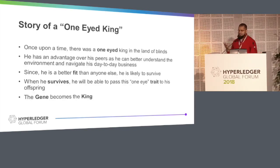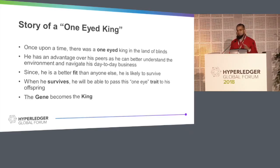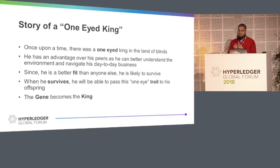Let me start with the story of the one-eyed king. There was a town of blind people, and there was a king who had one eye. Why was he king? Because he was the best to survive, to navigate his business. Since he's going to survive, he's more likely to pass this trait to his offspring. That gene becomes the king — that particular trait guarantees his success and survival.